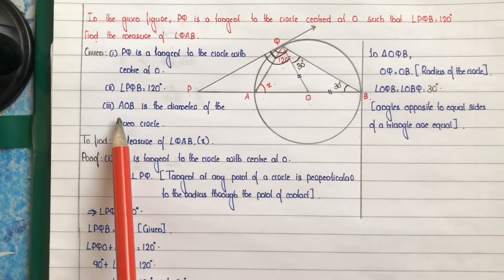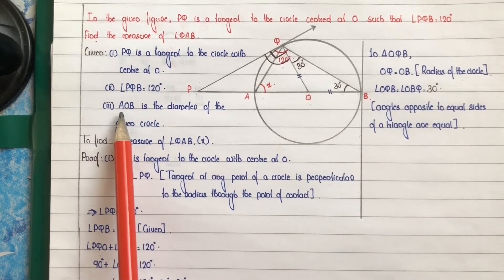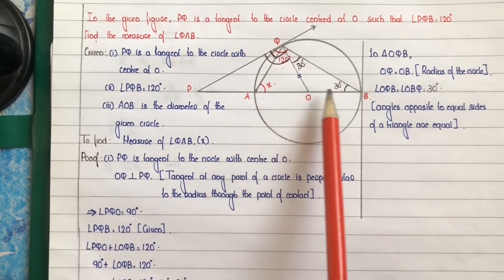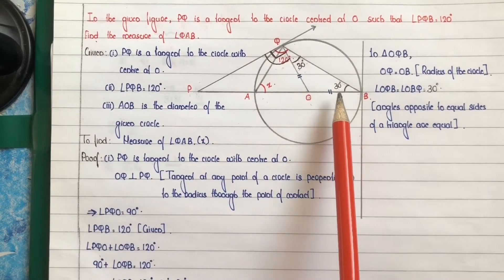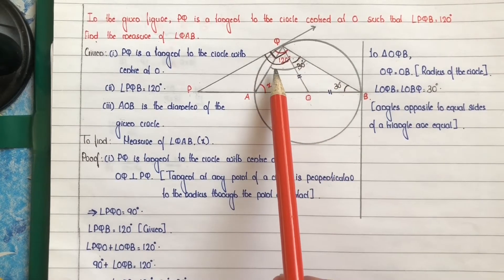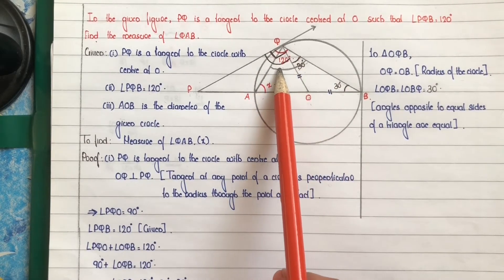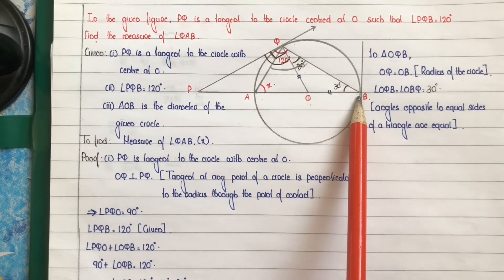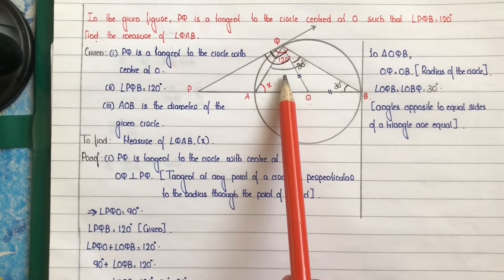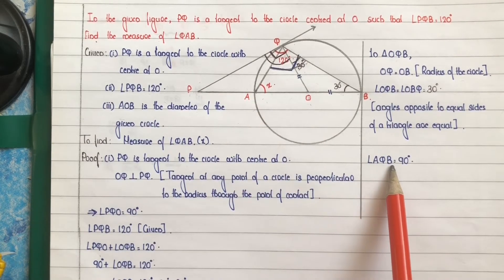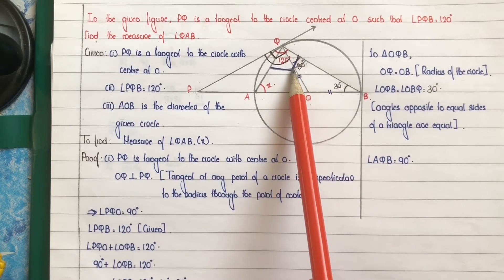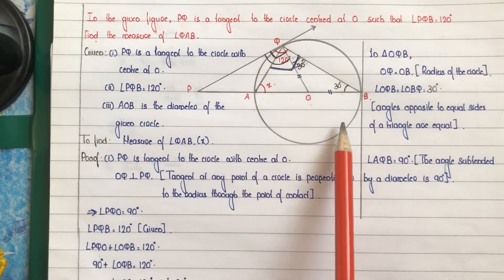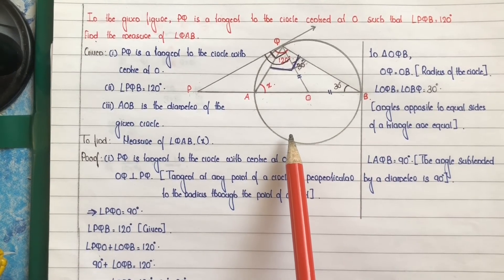Now consider the third given part: AOB is the diameter of the given circle. Since AB is the diameter of the circle, angle AQB is the angle subtended by the diameter AB on a point of the circle. By theorem, angle AQB is equal to 90 degrees, because the angle subtended by a diameter on any point of a circle is always 90 degrees.